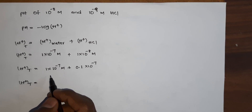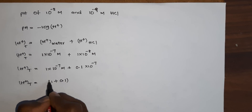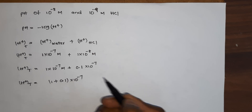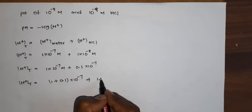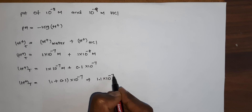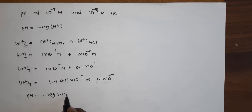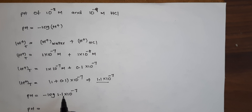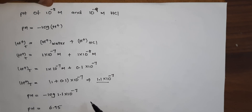Taking 10⁻⁷ as common: H⁺ total equals 10⁻⁷ multiplied by (1 + 0.1), which gives 1.1×10⁻⁷. So finally, pH equals minus log of 1.1×10⁻⁷, which gives pH equal to 6.95. This is the final pH of the dilute solution of 10⁻⁸ molar HCl.